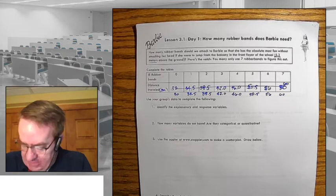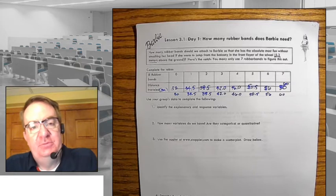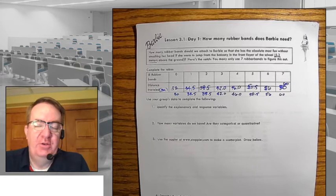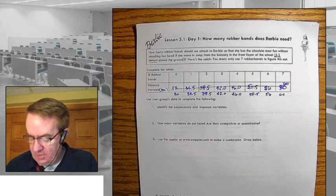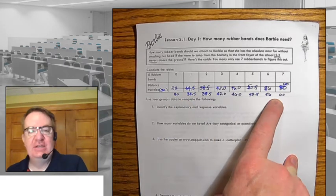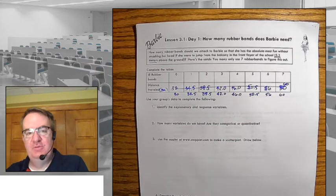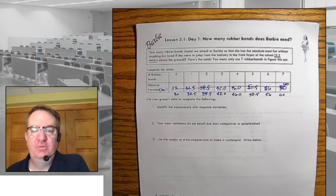So the way we end up doing this is that we give you seven rubber bands and a Barbie doll. You can bring in your own if you have one at home. And we're going to use those seven rubber bands to get data to figure out then how can we extrapolate that out to the 15-plus-meter third-floor stairwell.